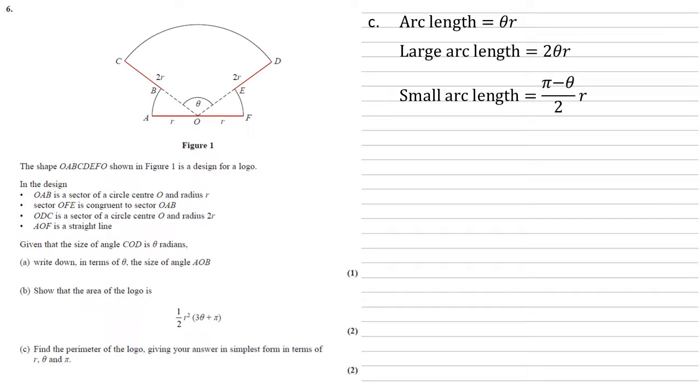So to get the total perimeter, we're going to add together one large arc length, the two small arc lengths, and those four R's that are colored in on the diagram. So we get a perimeter of 2θR plus two lots of π minus theta over two times R plus 4R.